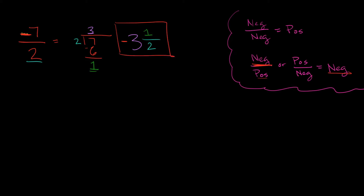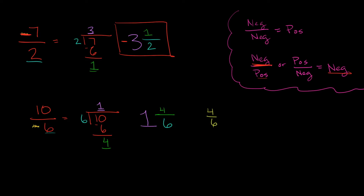So negative 7 over 2 is equal to negative 3 and 1 half. Let's try another example. What if we had 10 over negative 6? I'm just going to ignore my negative sign for now and solve this like normal. 10 over 6 is the same thing as 10 divided by 6. 6 goes into 10 one time, 1 times 6 is 6, so 10 minus 6 is 4. This top number is our whole number, our remainder goes in the numerator over our original denominator of 6. And 4 over 6 — can I reduce that? Yes, because the top and bottom are both divisible by 2. So 4 divided by 2 is 2, and 6 divided by 2 is 3. So I can reduce my answer down to 1 and 2 thirds.